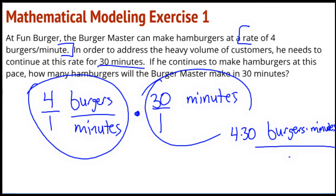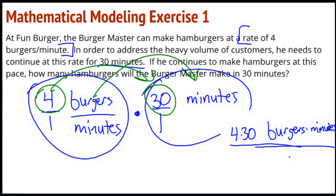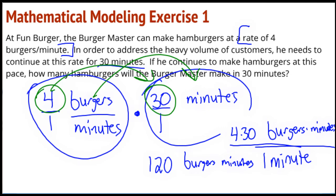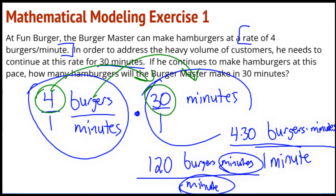So if I multiply, I get four times 30 burger-minutes in the numerator, divided by 1 minute in the denominator. In my numerator I've got minutes, and in my denominator I've got minutes — these are going to divide each other out. All I will be left with is 120 burgers.